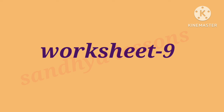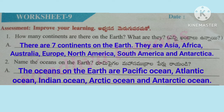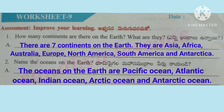Worksheet 9, Question 1: How many continents are there on the earth? What are they? There are 7 continents on the earth: Asia, Africa, Australia, Europe, North America, South America, and Antarctica. Question 2: Name the oceans on the earth. The oceans are Pacific Ocean, Atlantic Ocean, Indian Ocean, Arctic Ocean, and Antarctic Ocean.